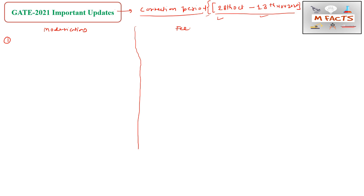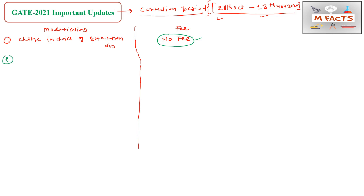The first modification you can do in GATE Metallurgy is related to the choice of examination cities. So if you want to change your examination city, there is no fees applicable — this is free during the correction period. You can change your choice of examination cities in the GATE 2021 application at no cost.